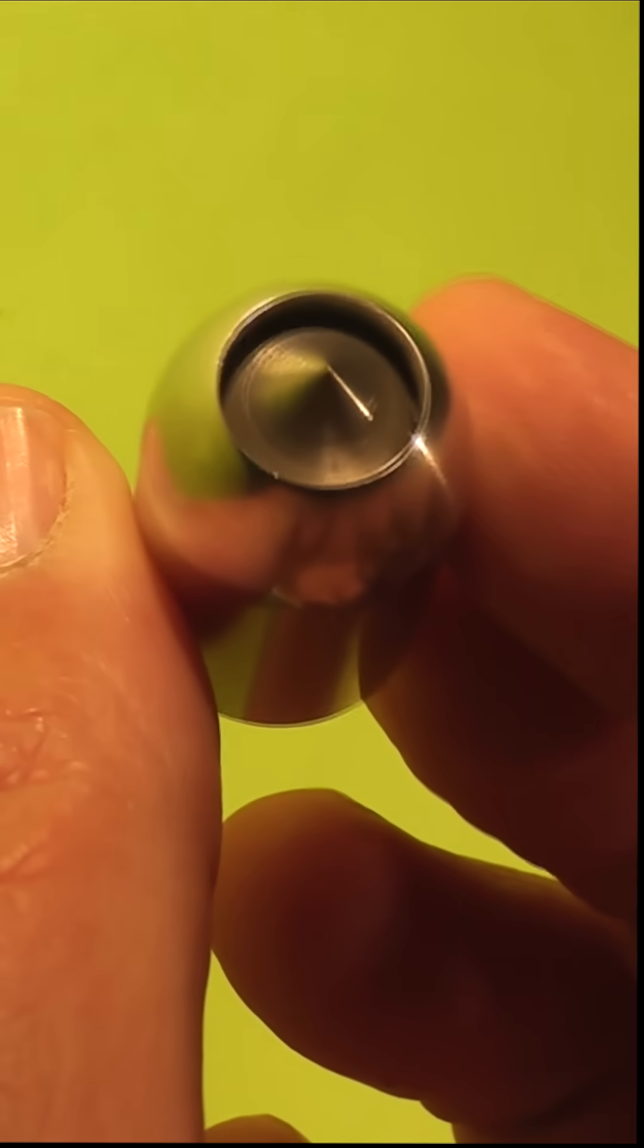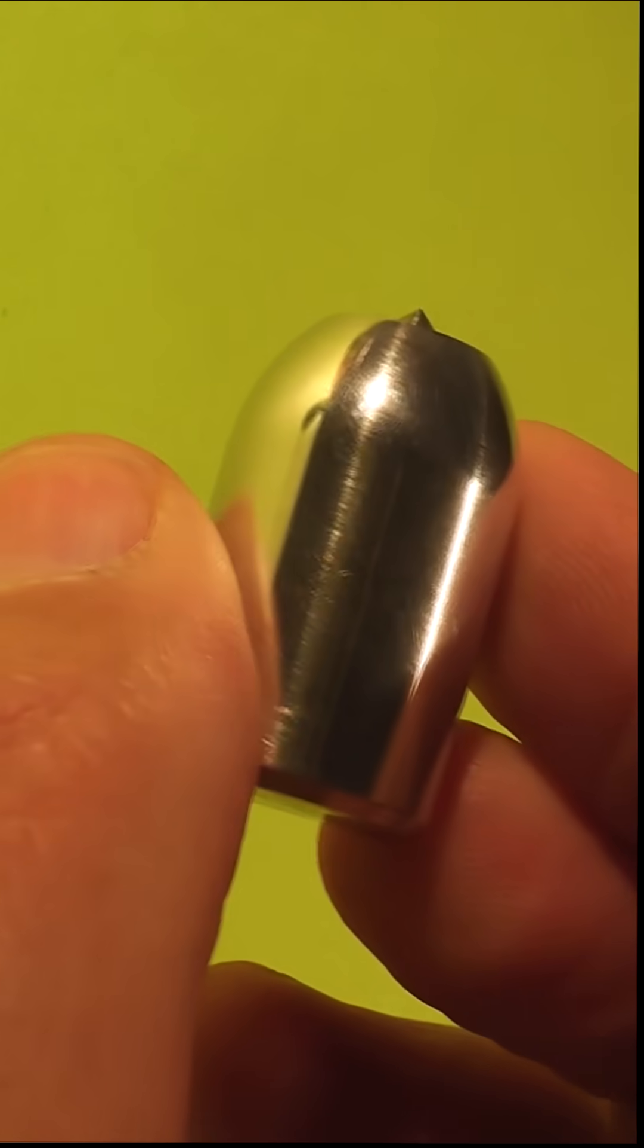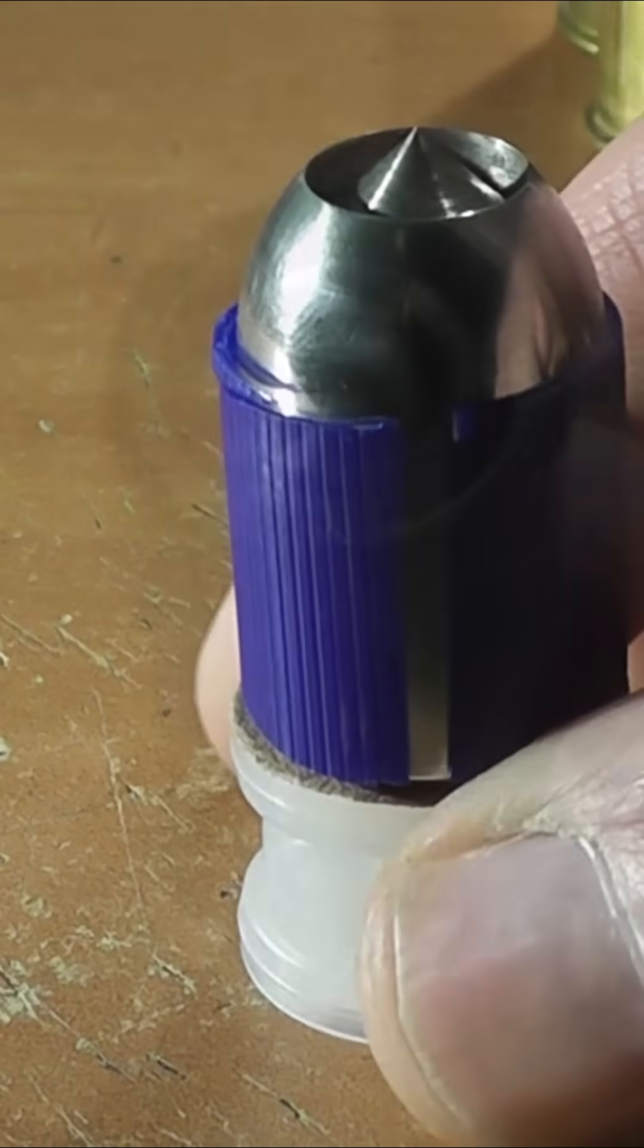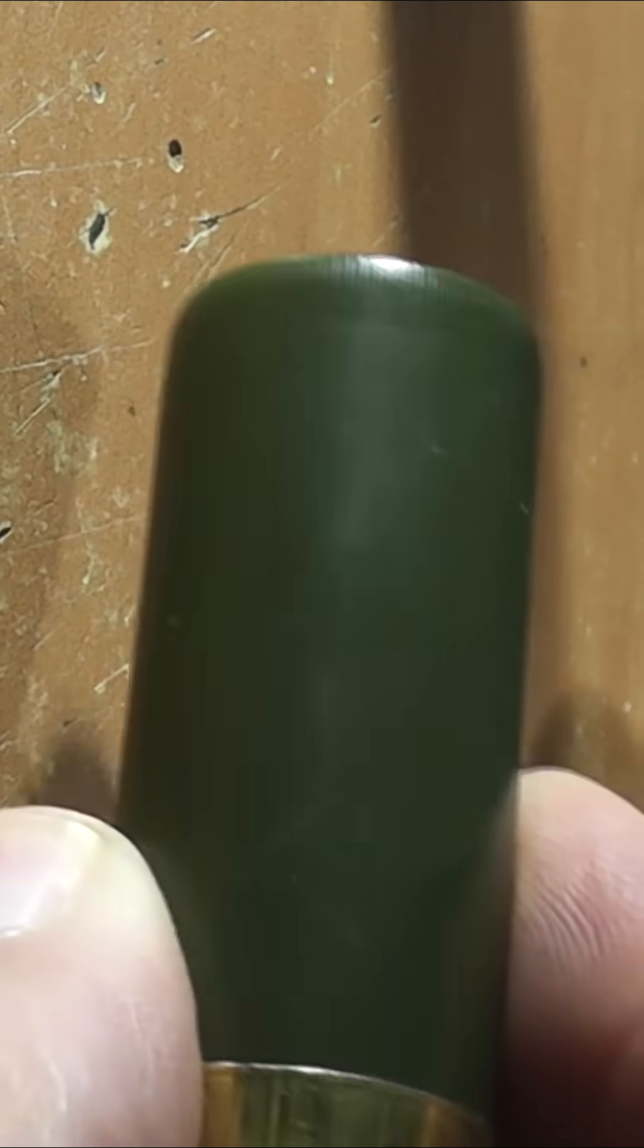One of our viewers named Kyle created a beautiful 12-gauge slug for us to test out. We will be using a two-piece discarding sabot with this, and this is what it looks like loaded into the 12-gauge shell.